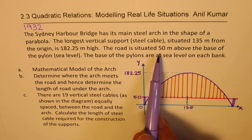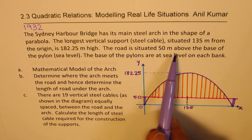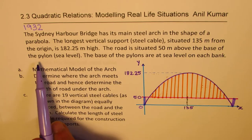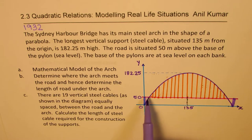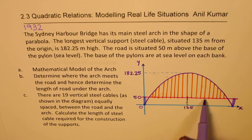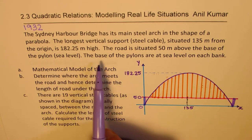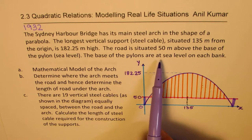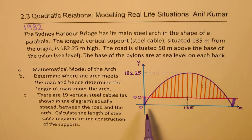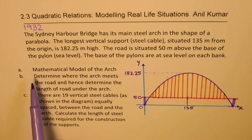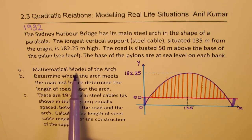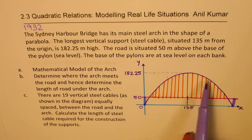The road is situated 50 meters above the base of the pylon at sea level. This blue line is the sea level, 50 meters above. The base of the pylons are at sea level on each bank — we are assuming this is sea level, all horizontal. Part A: we need to find a mathematical model of this parabolic arch.